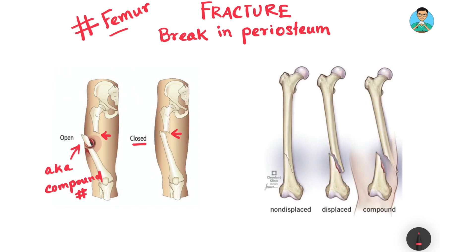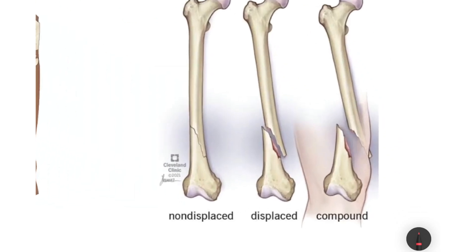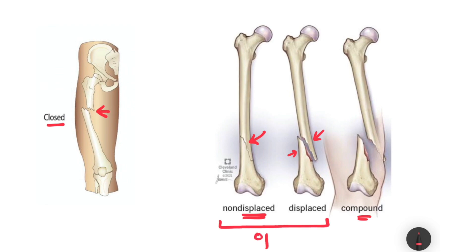Another way of classifying fractures is non-displaced versus displaced. In a non-displaced fracture, you can see a fracture line but the bone fragments have not changed their anatomical position with respect to each other. In a displaced fracture, the bone fragments have drifted away and changed their anatomical position. The extreme case of a displaced fracture is a compound or open fracture, where displacement is so extensive that the bone comes out through the skin. So compound fracture is itself a displaced fracture.